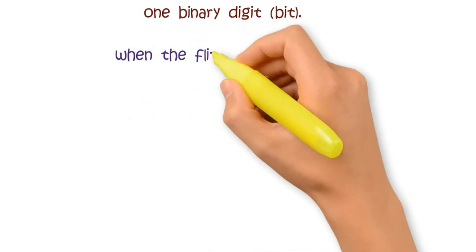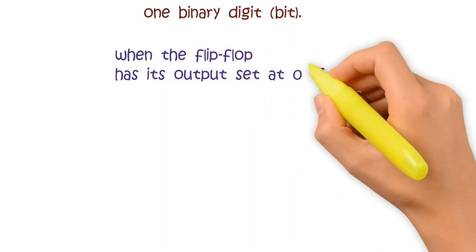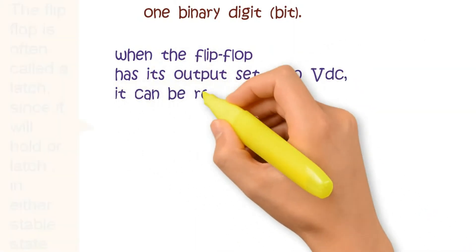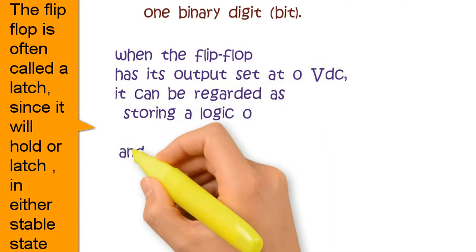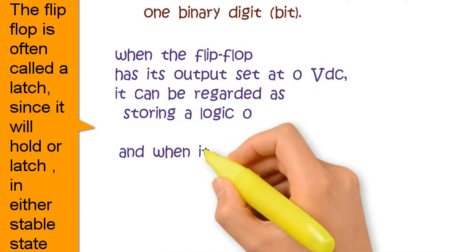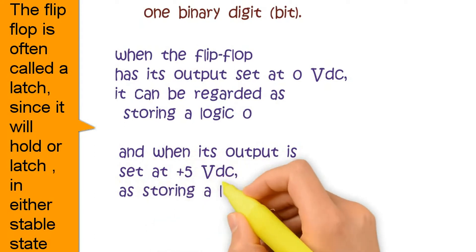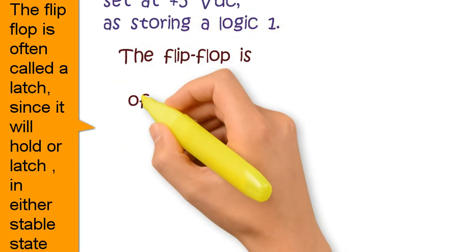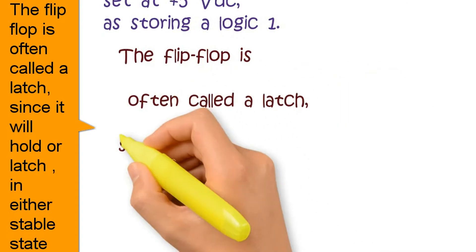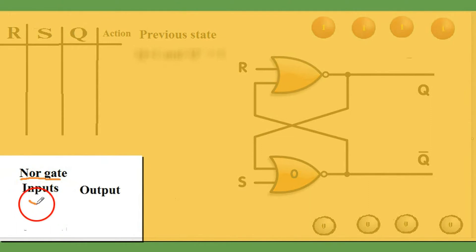When the flip-flop has its output set at 0V DC, then it can be regarded as storing a logic 0. When its output is set at plus 5V DC, it is storing a logic 1. This is also called a latch. Now we are going to understand what an RS flip-flop is.